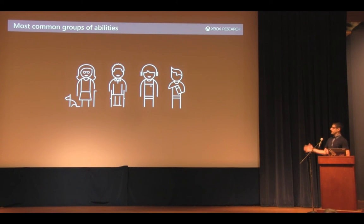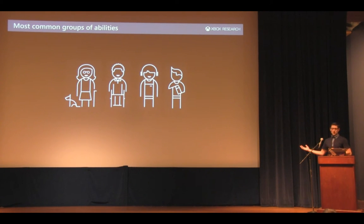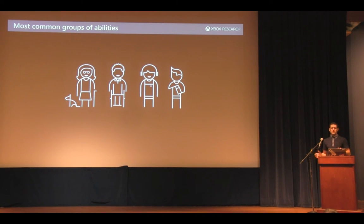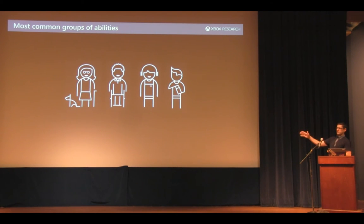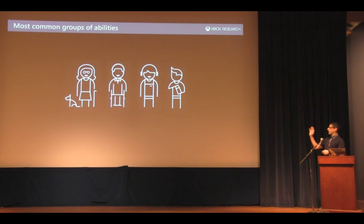One thing we learned is that you have to scope this quickly once you start talking to people. There are really four main categories we think about: vision, mobility, hearing, and speech. Now there are more than this — you can think about cognitive and other things. But in many cases, when you're talking about your gamer audience, if you start off with these four, you're going to go a long way. Traditionally you might think of these as blind, wheelchair or paralyzed, deaf, and mute.